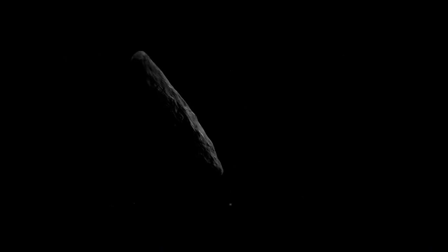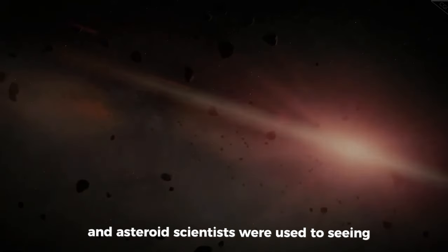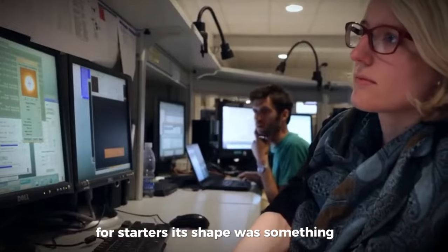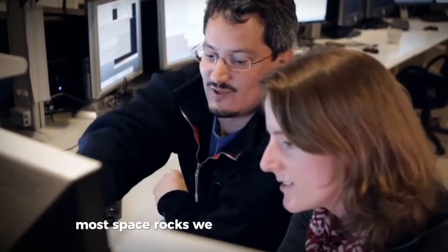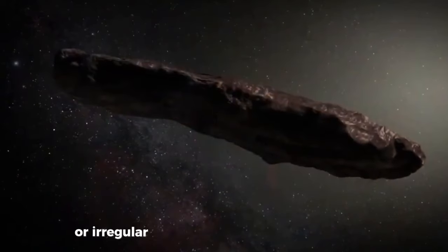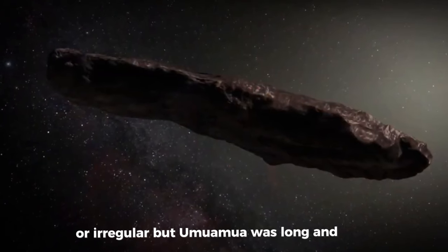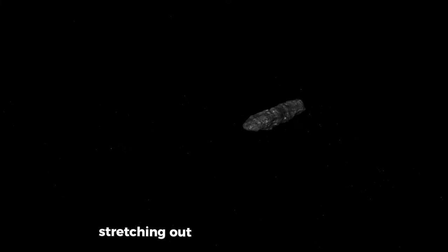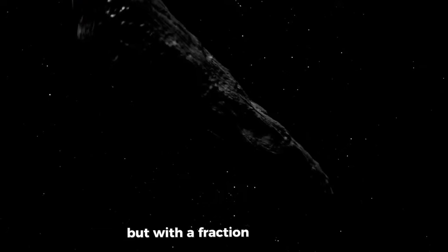But Oumuamua wasn't intriguing because of where it came from. This object had some pretty odd features that set it apart from the usual comets and asteroids scientists were used to seeing. For starters, its shape was something else. Most space rocks we encounter are somewhat roundish or irregular, but Oumuamua was long and skinny. It was a rock stretching out as long as a football field but with a fraction of the width.